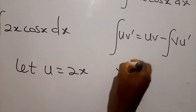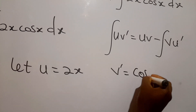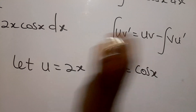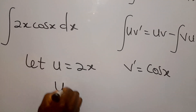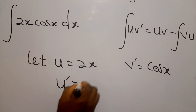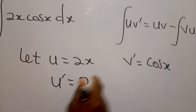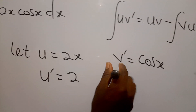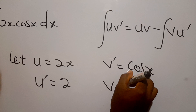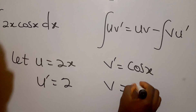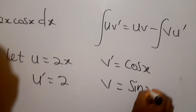And our v prime is equal to cos x. We differentiate u to get u prime, so u prime will be equal to 2. Then we integrate v prime to get v, and the integral of cos x is sine x.